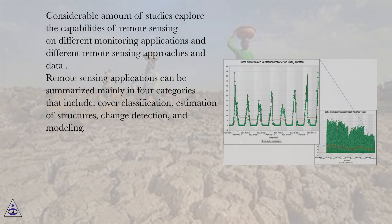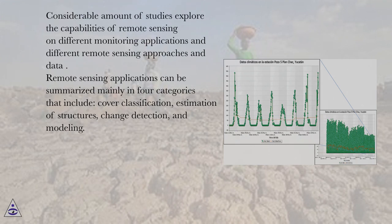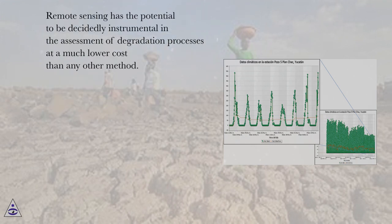Remote sensing applications can be summarized mainly in four categories that include cover classification, estimation of structures, change detection, and modeling. Remote sensing has the potential to be decidedly instrumental in the assessment of degradation processes at a much lower cost than any other method.